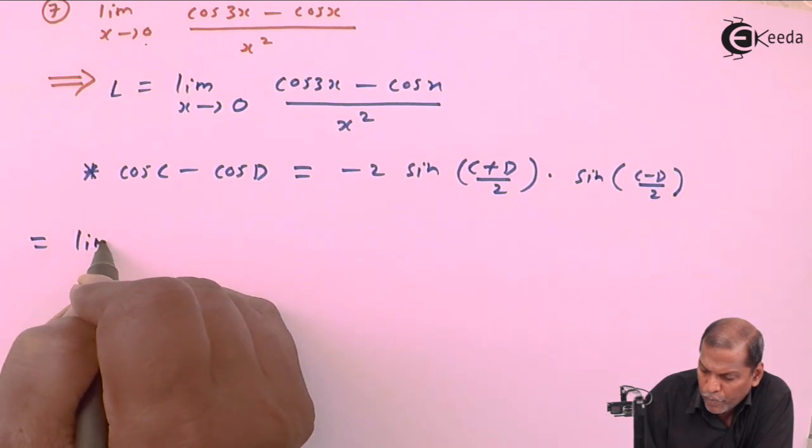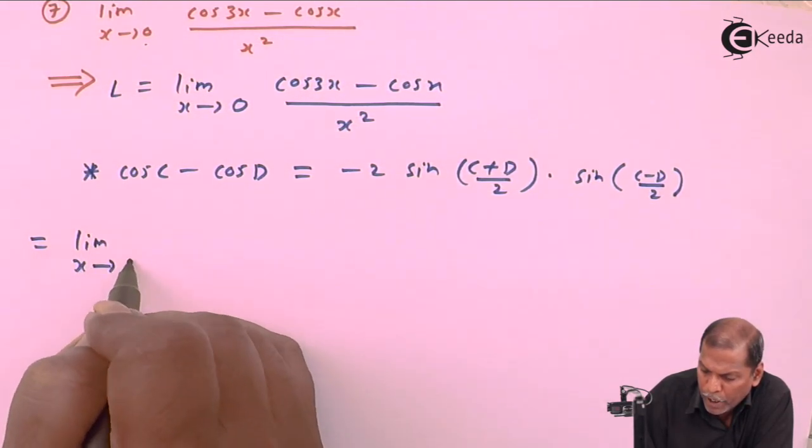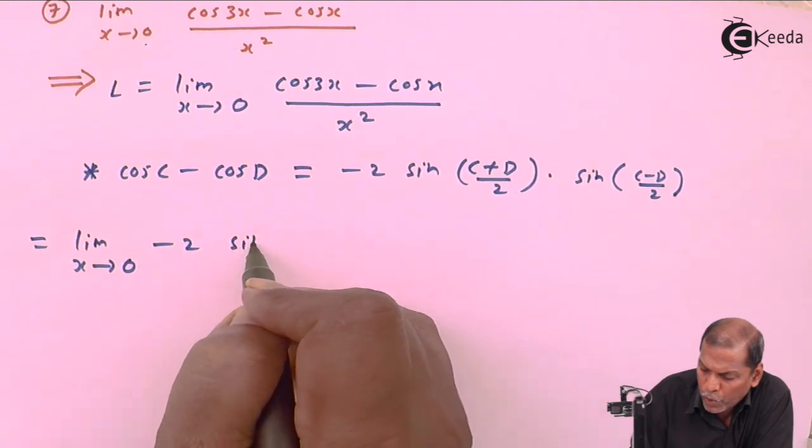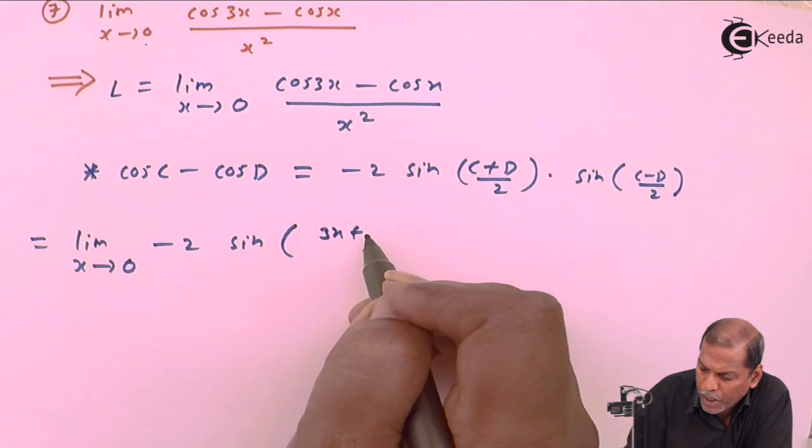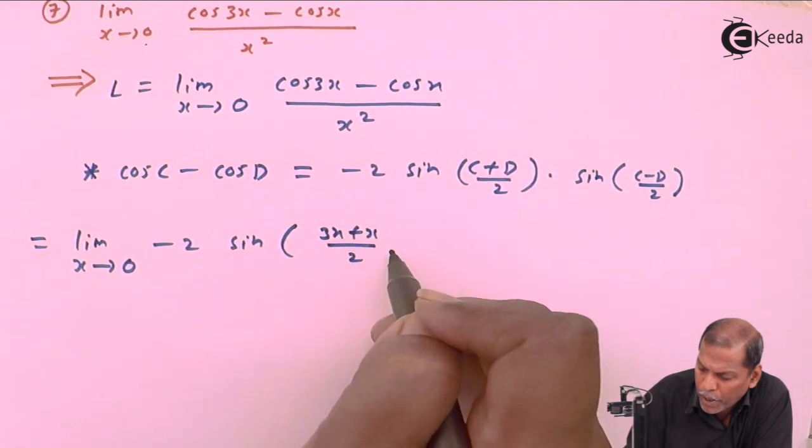So the next step will be: limit x tends to 0, minus 2 sine in bracket 3x plus x upon 2, into sine 3x minus x upon 2